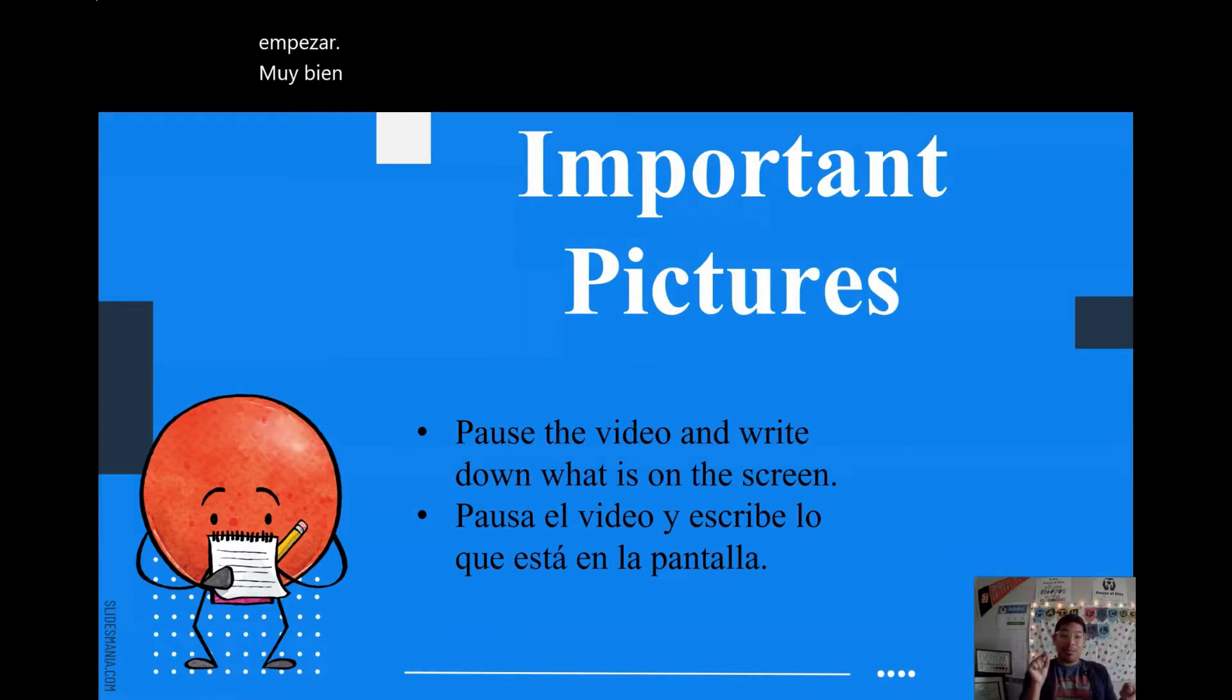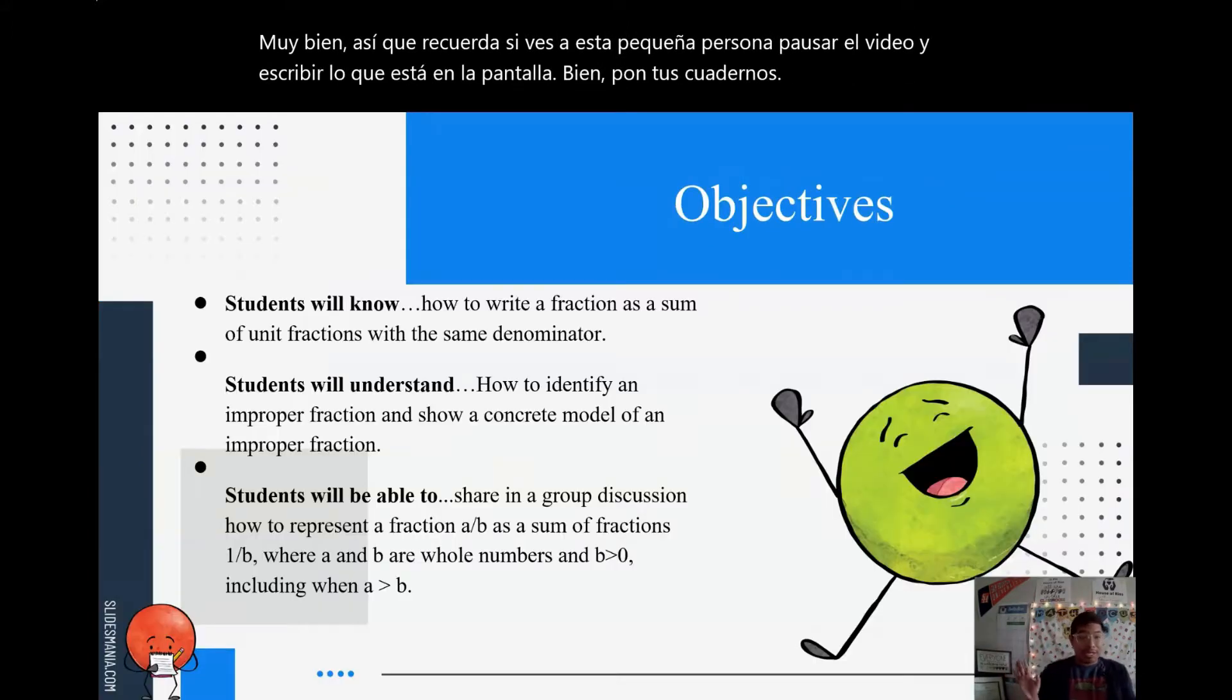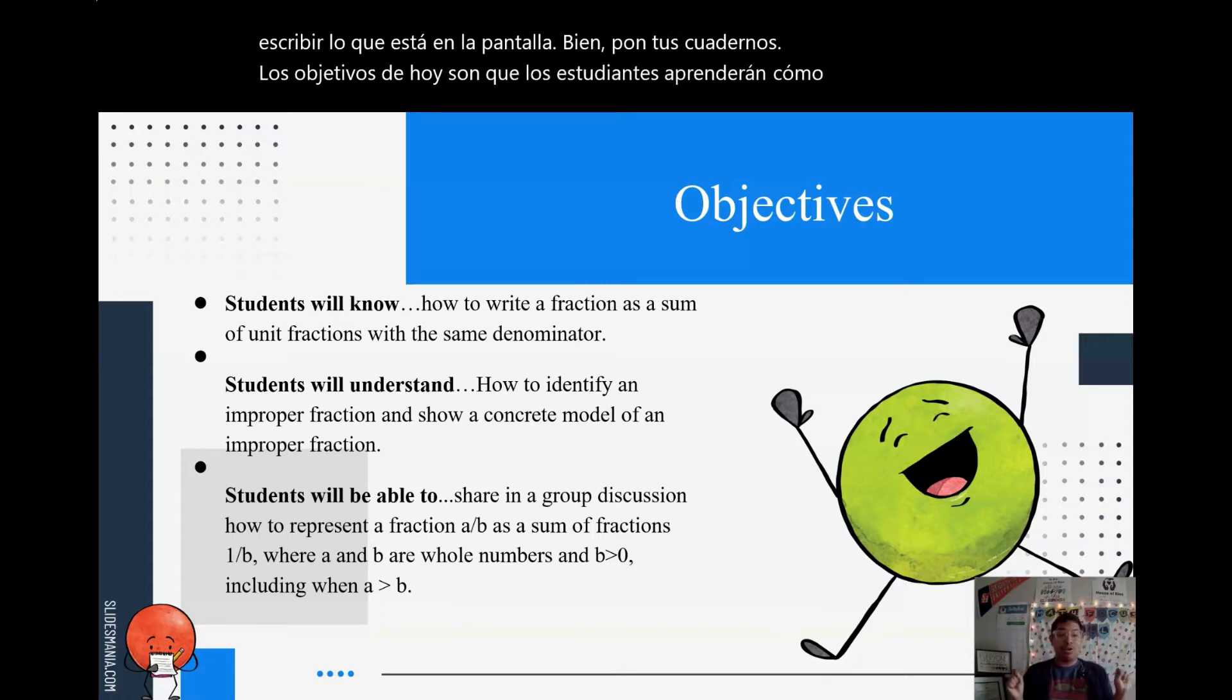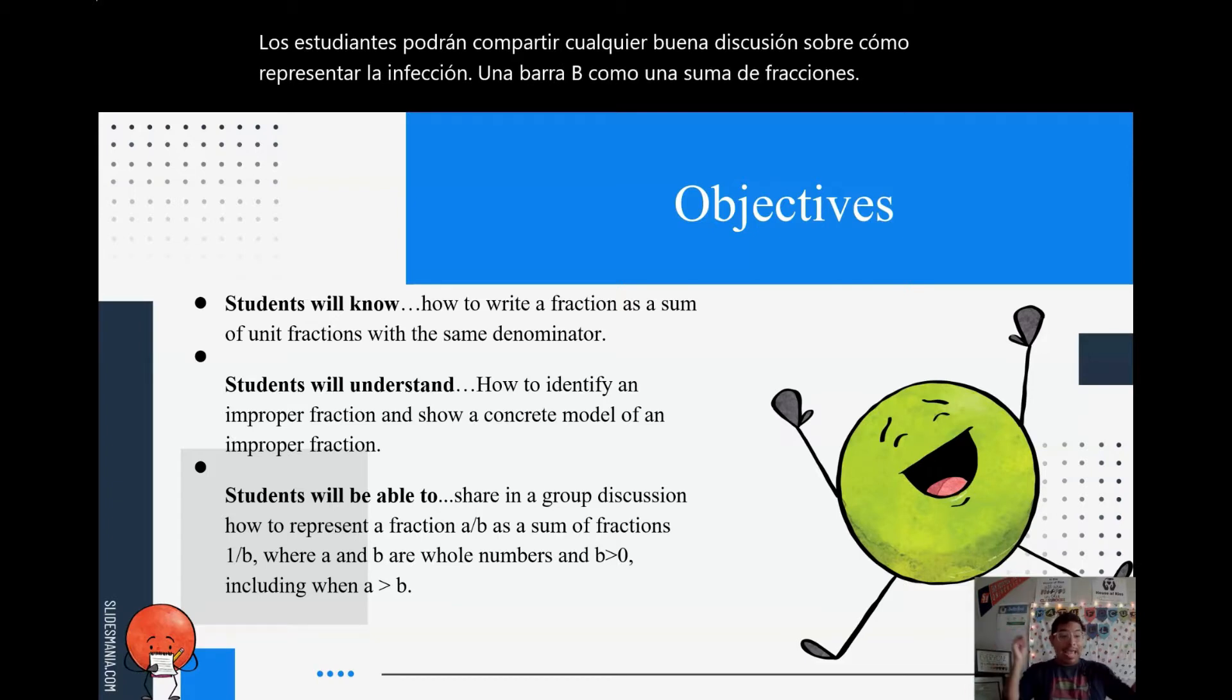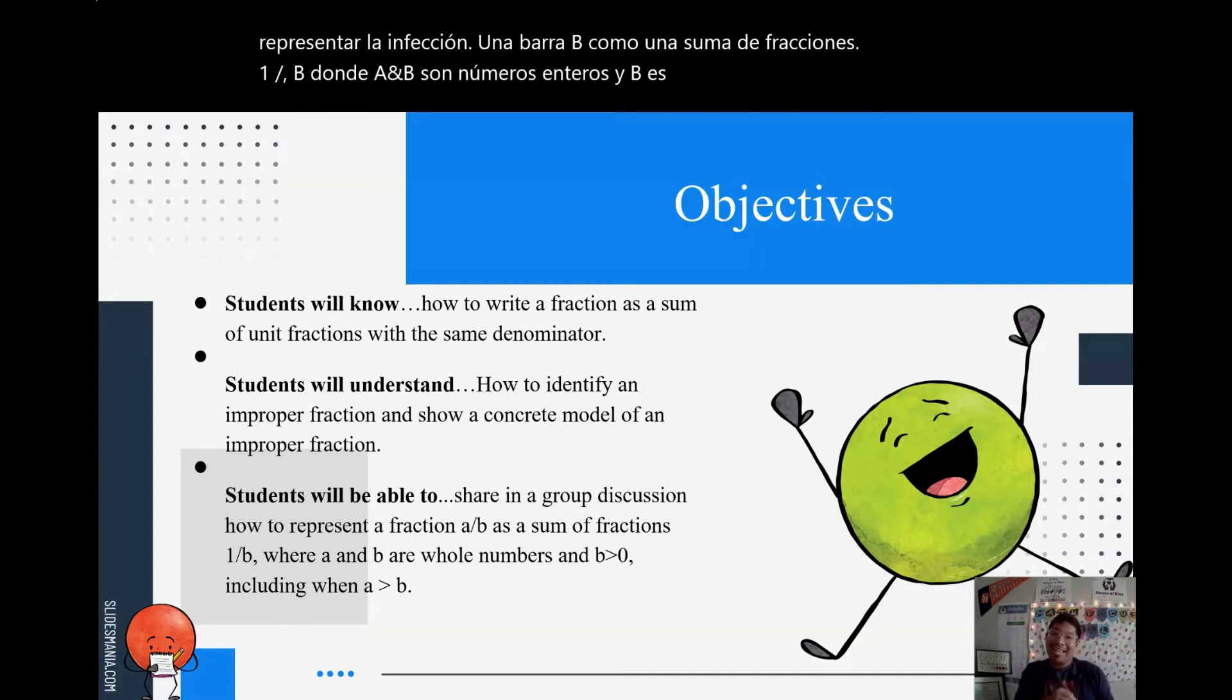Remember, if you see this little person, pause the video and write down what's on the screen. Put it in your notebooks. Today's objectives are: students will learn how to write a fraction as a sum of unit fractions with the same denominator. Students will understand how to identify an improper fraction and show a concrete model of an improper fraction. Students will be able to share in a group discussion how to represent a fraction A/B as a sum of fractions 1/B where A and B are whole numbers and B is greater than 0, including when A is greater than B.